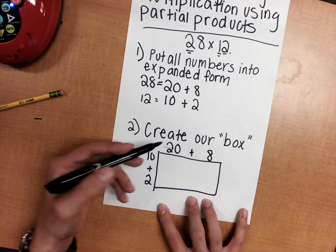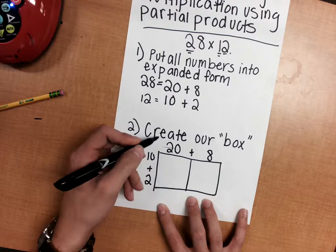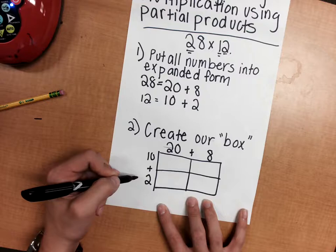I'm going to create a vertical line at every plus sign. And when I see a plus sign on the left side, I'm going to create a horizontal line. So now I have four boxes.